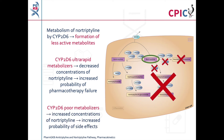In CYP2D6 poor metabolisers, metabolism of nortriptyline is reduced. This increases the concentrations of nortriptyline in the body, which increases the probability of side effects.